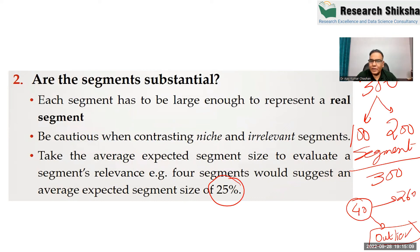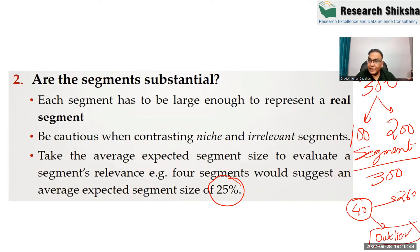Each segment has to be large enough to represent a real segment. Be cautious when considering niche or irrelevant segments. Sometimes you may find a segment size of 50 out of 400, and you may be confused whether it is a niche segment or an irrelevant segment. The literature says that small segments are basically not niche segments — the chances are high that they are outliers.